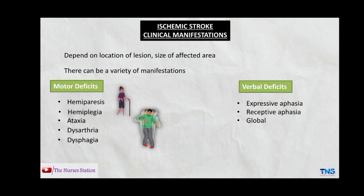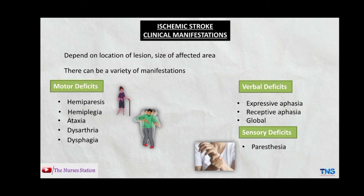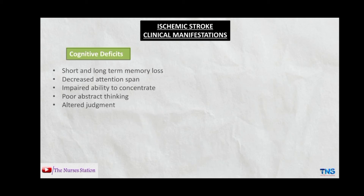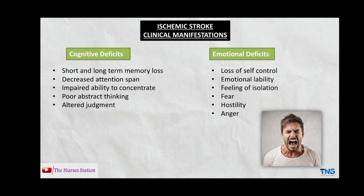Verbal deficits include expressive aphasia — inability to form understandable words — receptive aphasia — inability to understand spoken words — or global aphasia, which is a mixture of both. Sensory deficits include paresthesia, which is numbness or tingling in body parts. Cognitive deficits include short and long-term memory loss, decreased attention span, impaired ability to concentrate, poor abstract thinking, and altered judgment. Emotional deficits include loss of self-control, emotional lability, feelings of isolation, fear, hostility, and anger.